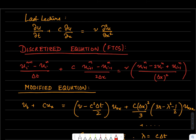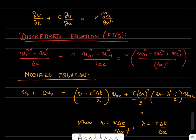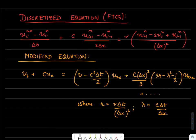In the last lecture we looked at the linearized Burgers equation and discretized it using forward time and central space differencing. This equation was written as: (u_i^{n+1} - u_i^n)/Δt + c(u_{i+1}^n - u_{i-1}^n)/(2Δx) = ν(u_{i+1}^n - 2u_i^n + u_{i-1}^n)/Δx². The modified equation corresponding to this discretization has the same time and space derivative terms, except the right-hand side has a modified dissipation term with variables r and λ.